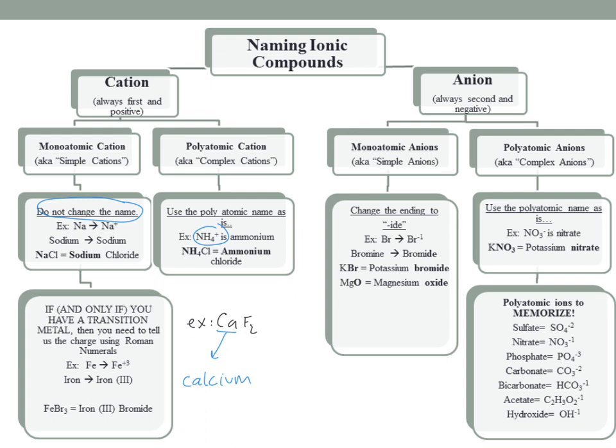One thing we'll talk about is that if you have a cation that is a transition metal, you need to state what the charge is on that metal, because transition metals can have different charges and you can't just guess. You have to write it so everyone knows you're talking about iron(II) chloride versus iron(III) chloride — saying just 'iron chloride' is ambiguous. Whatever the charge is on your metal, that's the Roman numeral you put right after it in parentheses.